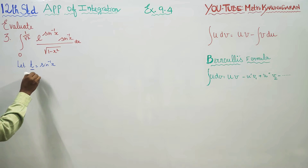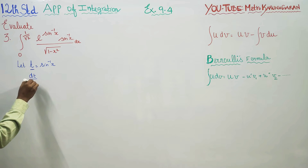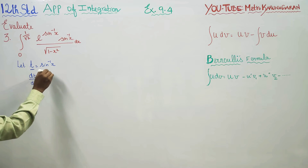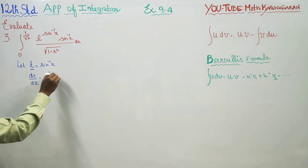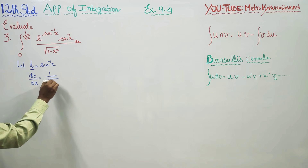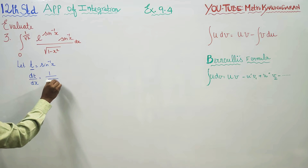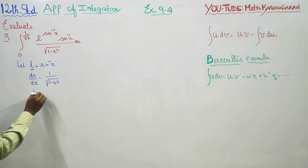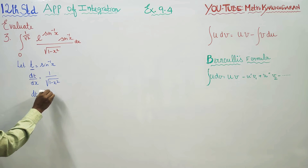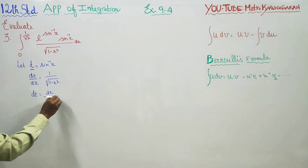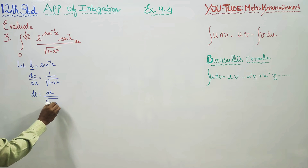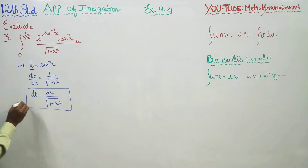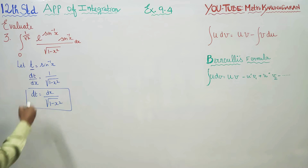What is my dt/dx? Differentiating sin⁻¹x gives 1/√(1 - x²). Cross-multiplying, dt = dx / √(1 - x²). This is my new substitution for dt.